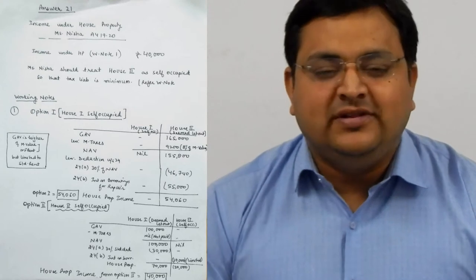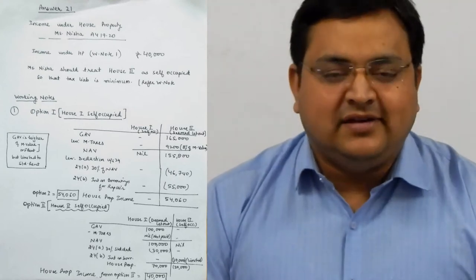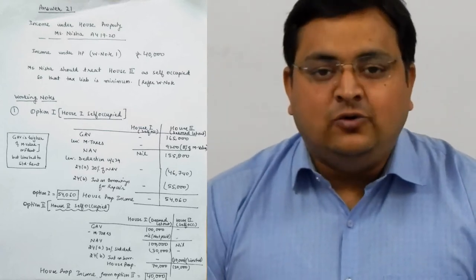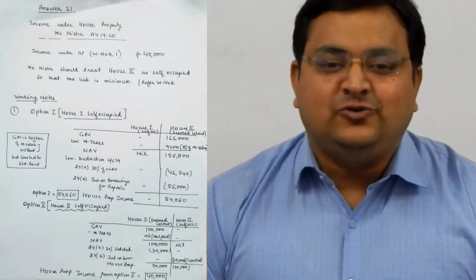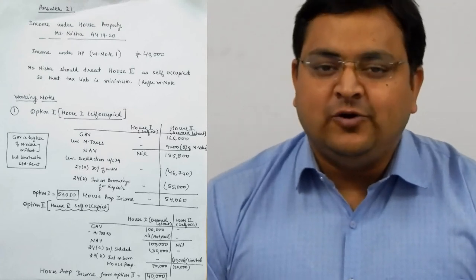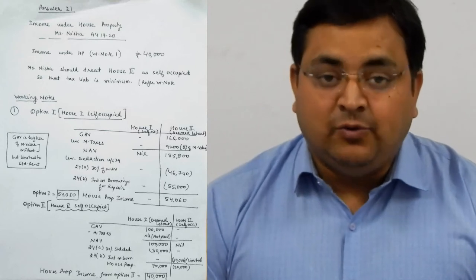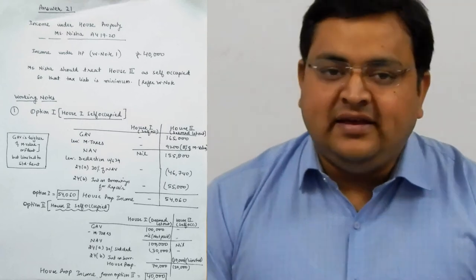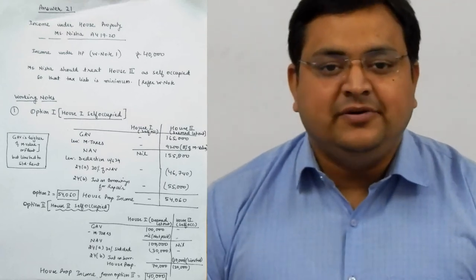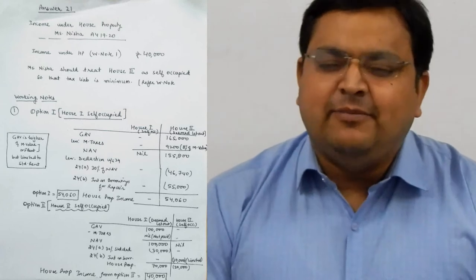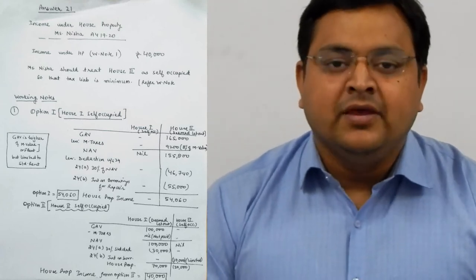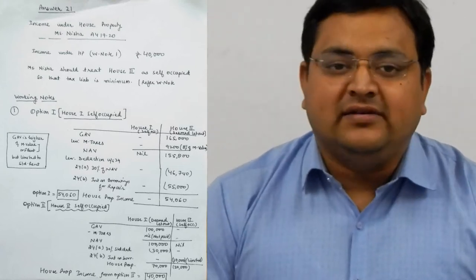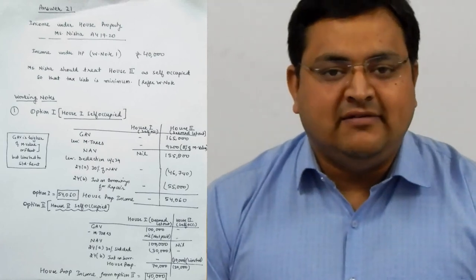Option 1 - first, you will have space for 2-3 lines where you will write your main answer and make a working note. Taking option 1, house 1 as self-occupied and house 2 deemed let out. Because house 1 will be self-occupied, its net annual value NAV will be null. 24A standard deduction will not be needed because it is 30% of NAV and NAV is zero. Interest on money borrowed will be found, but house 1 has no interest, so house 1 income is zero.